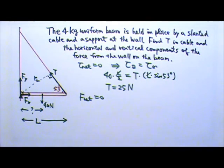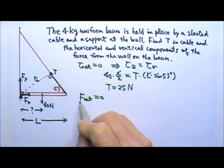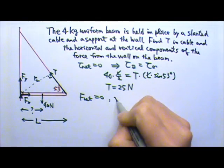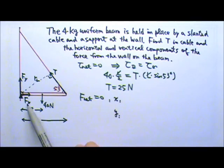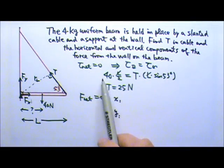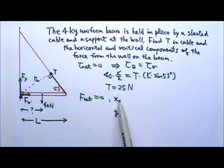Now we have to look at the net force equals zero. It looks like this is just one equation, but it's actually two equations, because we have net force equals zero for the x direction and the y direction. We have three unknowns to find: T, Fx, and Fy, so we do need three equations. The net torque equals zero is one equation; the net force equals zero is two equations — one for the x direction, one for the y direction. So three equations for our three unknowns.